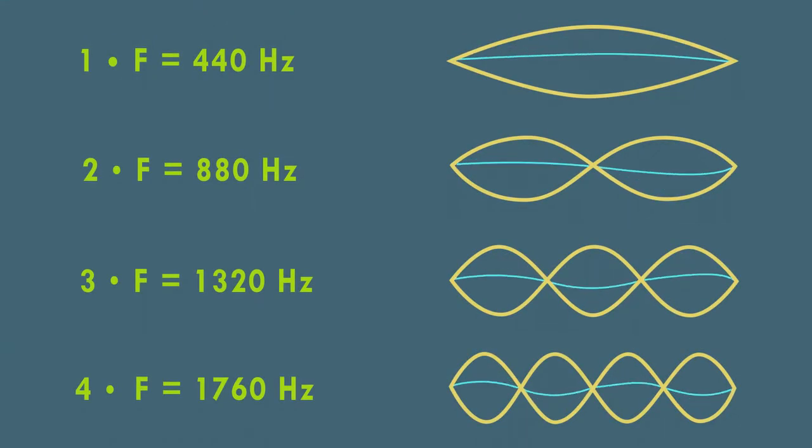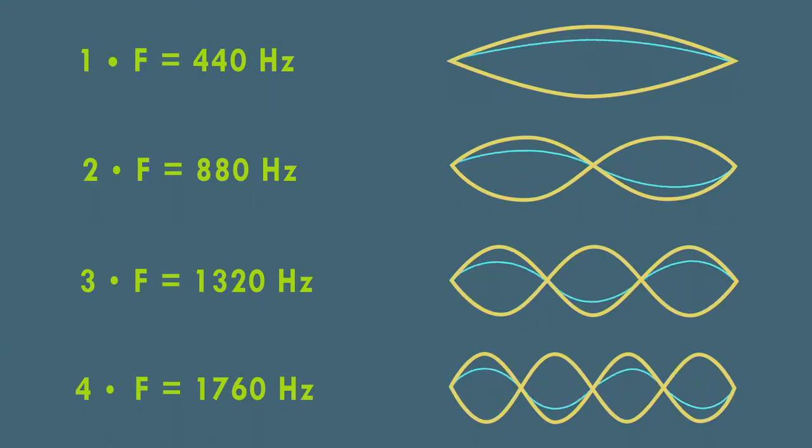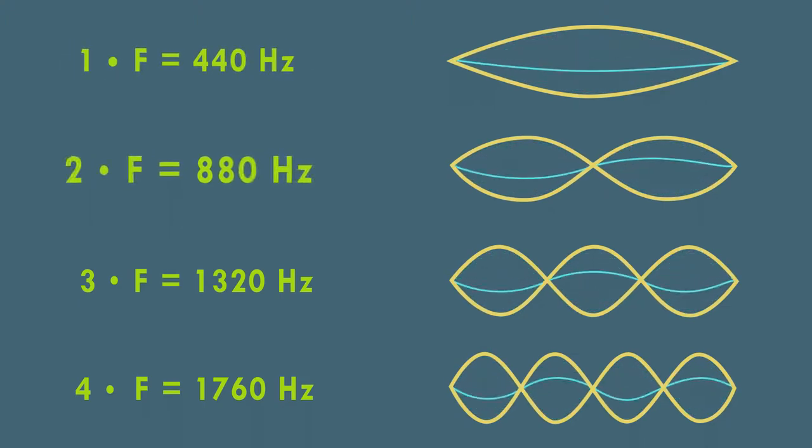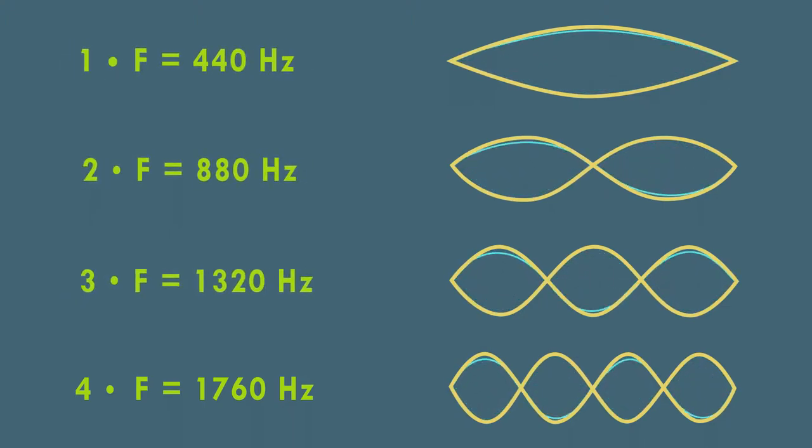That means that when playing our middle A on a piano, the pitch we hear will consist of sounds of frequencies of 440, 880, 1320, 1760 Hz, etc.